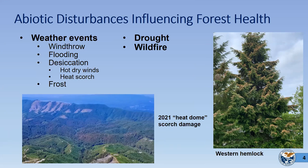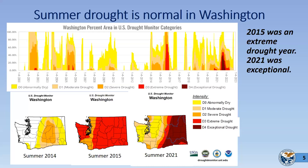A recent example in western Washington was the heat dome of June 2021. The damage was so obvious in some places we were actually able to see it from the air and map it. Here's a western hemlock showing heat scorch damage on the branch tips. We did not see these heat scorch symptoms in eastern Washington because trees there are much more accustomed to high temperatures in June.